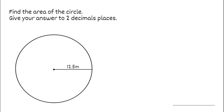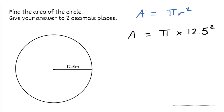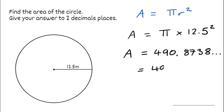For our next question, we've got to find the area of the circle again, but this time we're giving our answer to two decimal places. So we're going to write our formula down first — area is equal to pi times r squared. In this example, we've got a radius of 12.5 metres. So substituting in, our area would be pi multiplied by 12.5 squared. If we type that into the calculator — pi multiplied by 12.5 squared — we get 490.8738 and a few extra. That's enough to round. So we need to round to two decimal places, so our area would be 490.87.